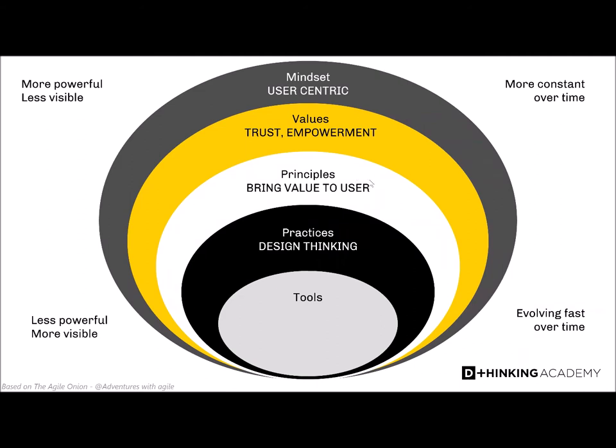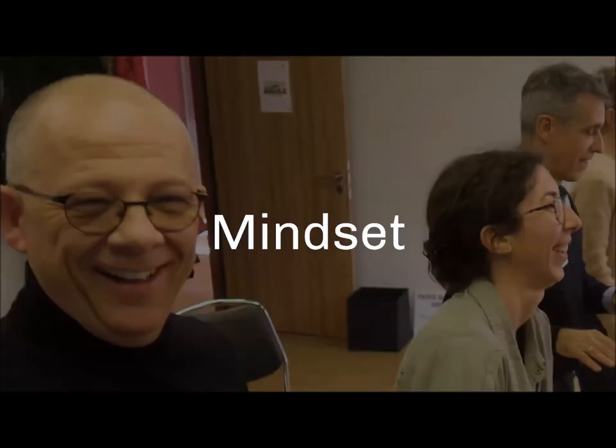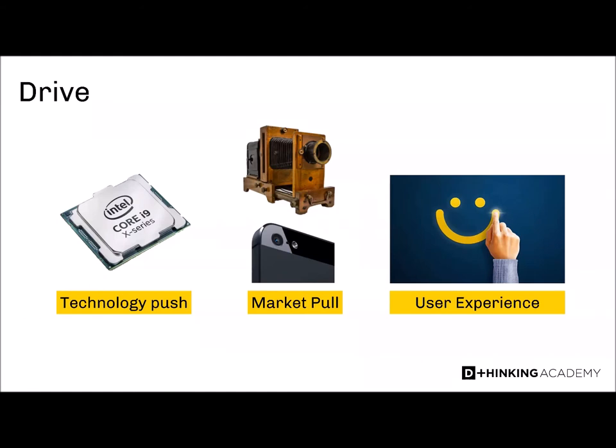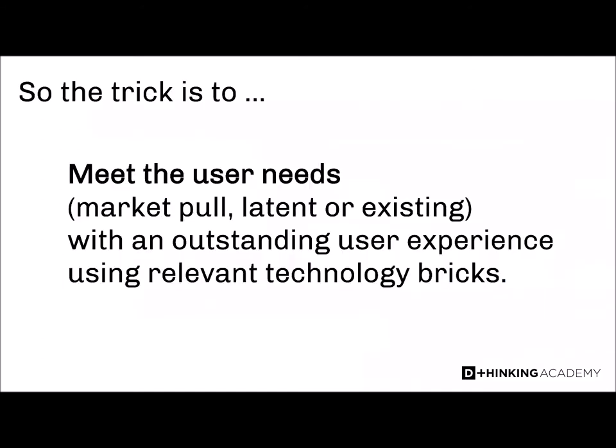We have a technology push — microprocessors or memories are a good example. We have a market pull — you have that on your mobile phone with cameras. And you have user experience, bringing the best experience possible to users. The trick is to meet the user needs: that's market pull, latent or existing, with an outstanding user experience using relevant technology. But the most important is to meet the user needs.